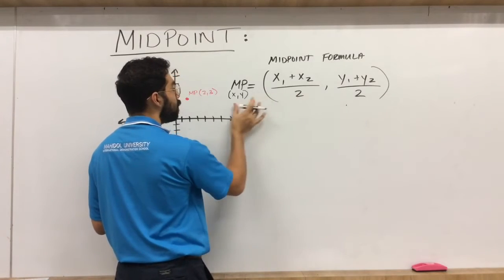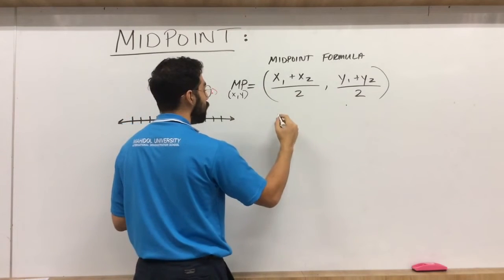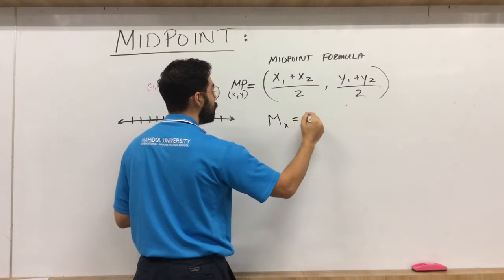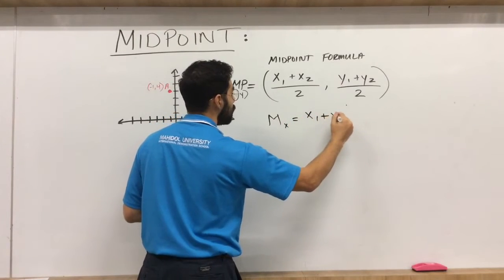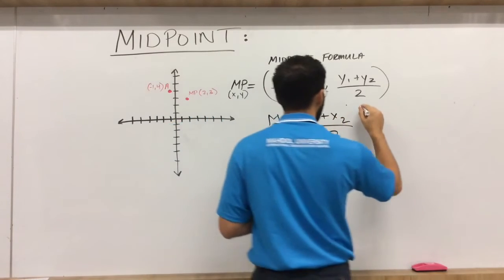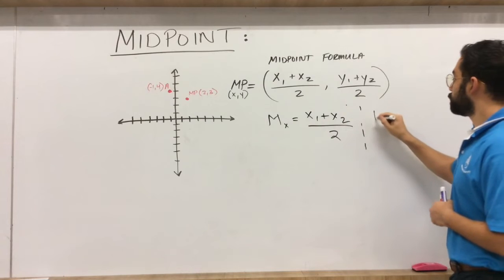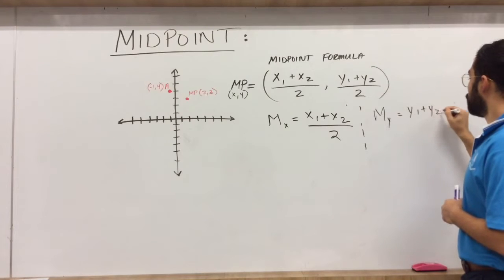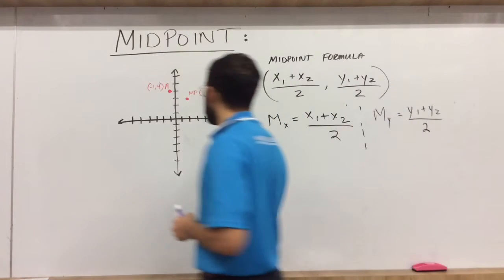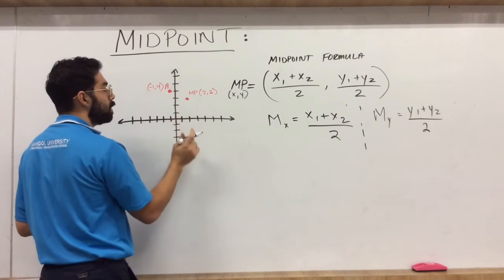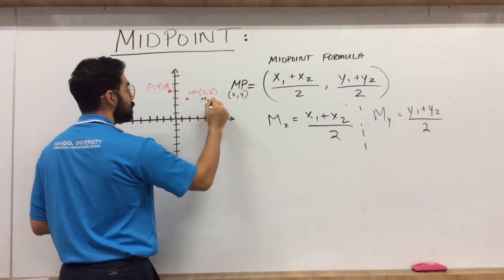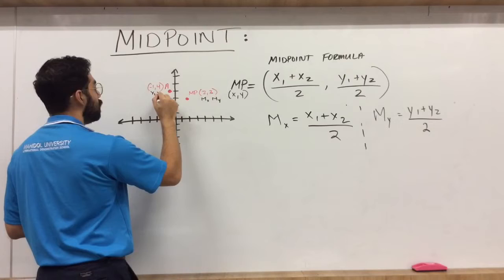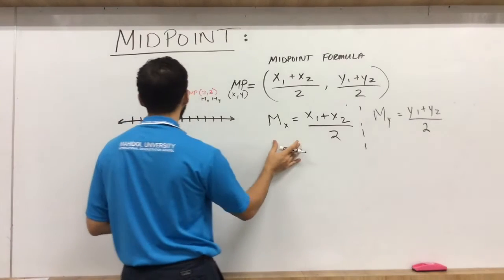Again, this will tell our x value for our midpoint. This tells our y value for our midpoint. So let's go ahead and use that to our advantage. So the x value of your midpoint is derived by this, and the y value for your midpoint is going by this. Okay, so all we have to do is use these to our advantage. So again this would be our x value for our midpoint, y value for our midpoint. We can say x1 and y1.